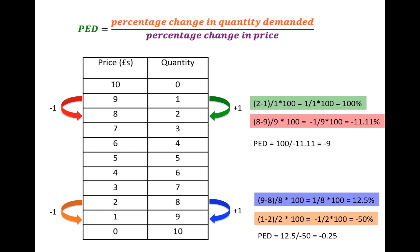As you can see, mathematically we can prove that the price elasticity of demand changes along the demand curve, and it's all to do with the relative percentage change in quantity and the relative percentage change in price. It's about the percentage change — it's not about the absolute change.